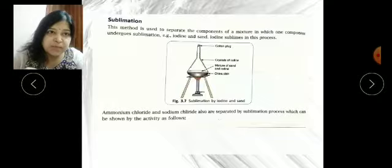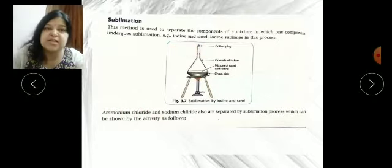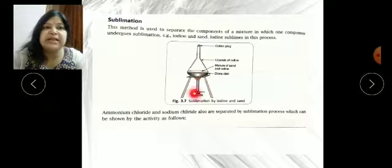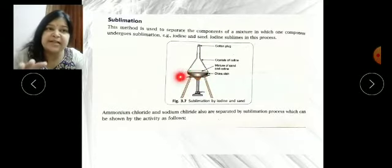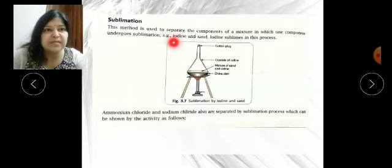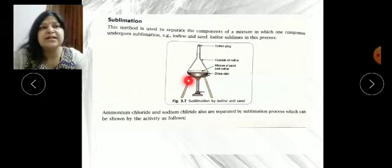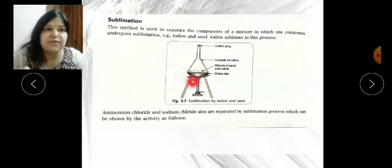What we should do is place the mixture in a china dish, whether iodine and sand or ammonium chloride and sodium chloride. When we heat it, only the sublimating agent like iodine or ammonium chloride will turn from solid to vapor form.